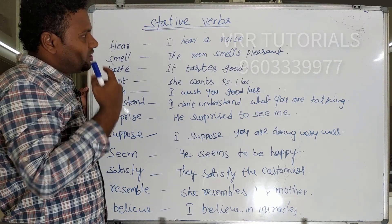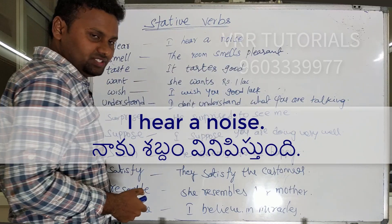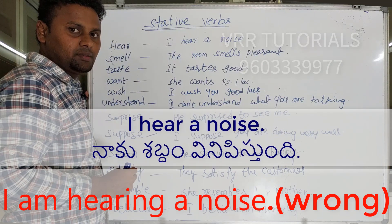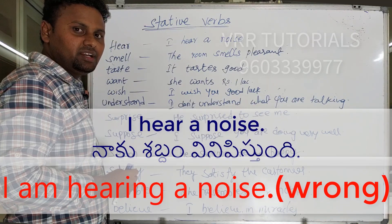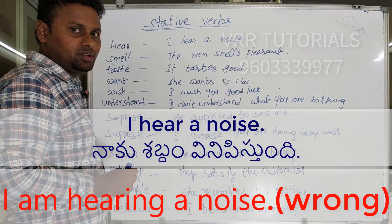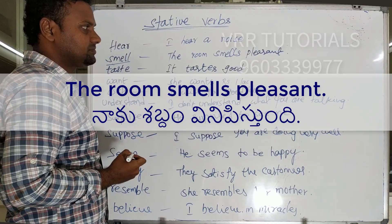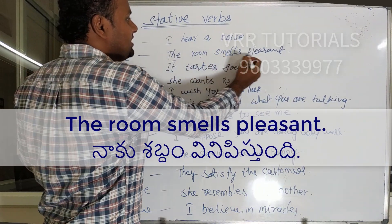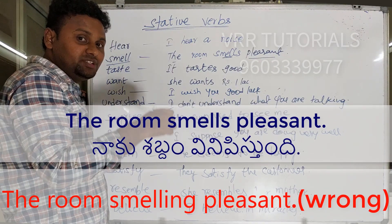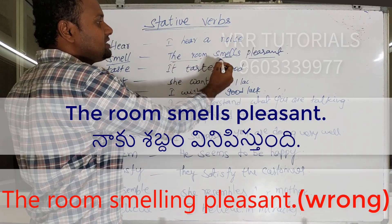Next: 'hear.' Hear also functions as a stative verb. I hear a noise — that is correct. Saying 'I am hearing a noise' is incorrect. Next: 'smell.' The room smells pleasant — that is correct. Saying 'the room is smelling pleasant' is incorrect. So: the room smells pleasant.